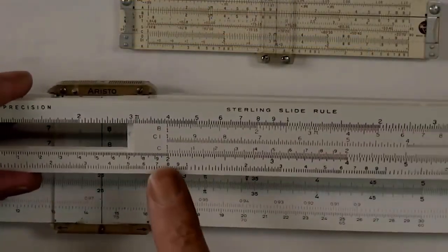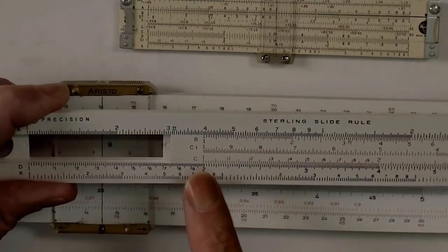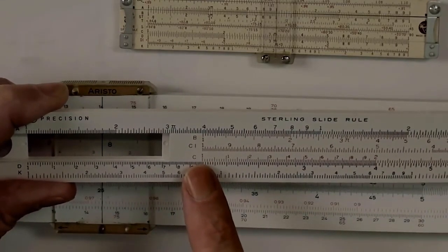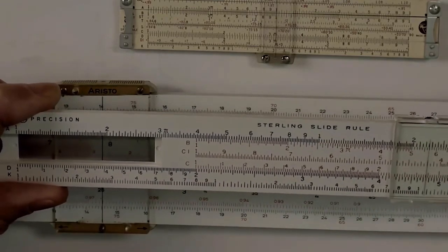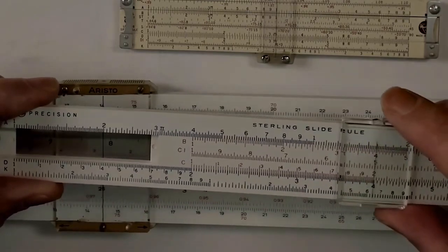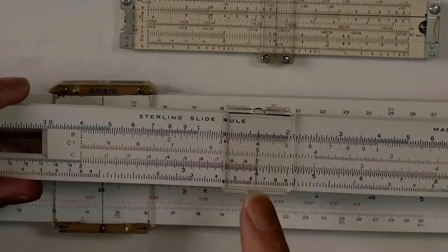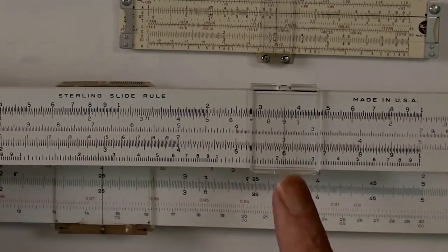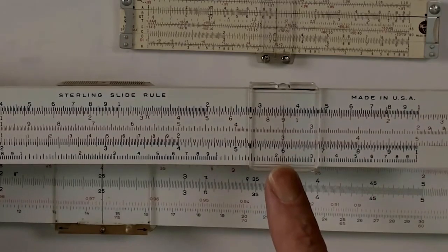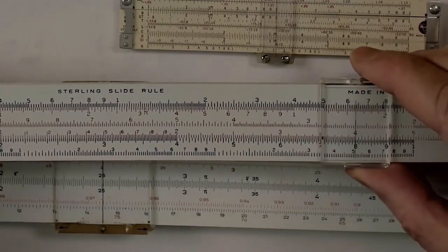For example, here we see the 2 on what's called the d-scale of the slide rule, and we've placed the 1 on the c-scale directly above it. By going out to 2 on the c-scale, we multiply 2 by 2 and get our resulting answer of 4. Likewise, we can multiply 2 by 3 and come up with the answer of 6. For 4 by 2, there's 8.